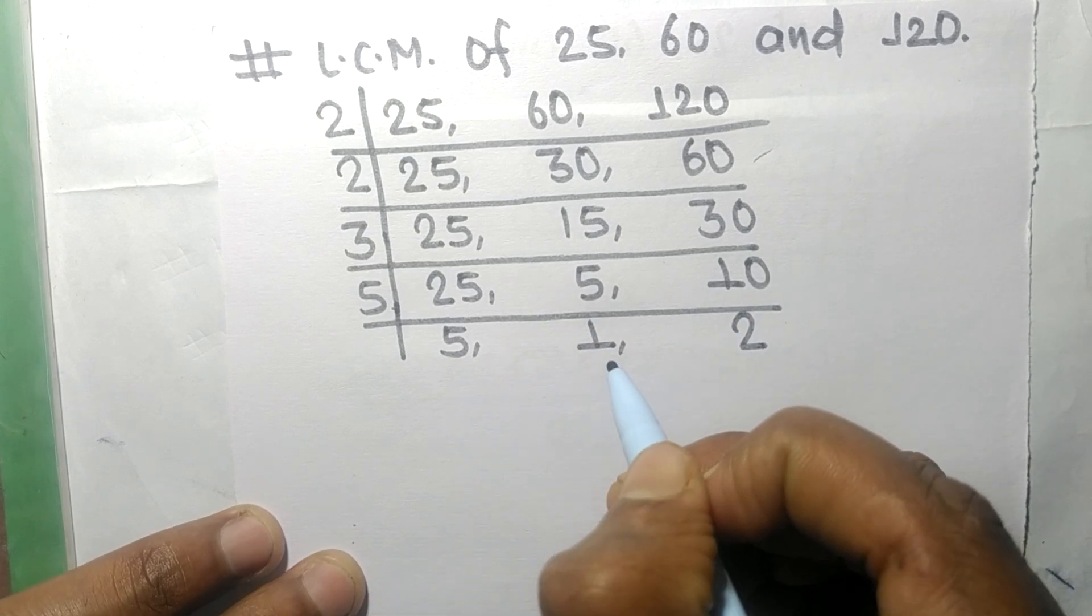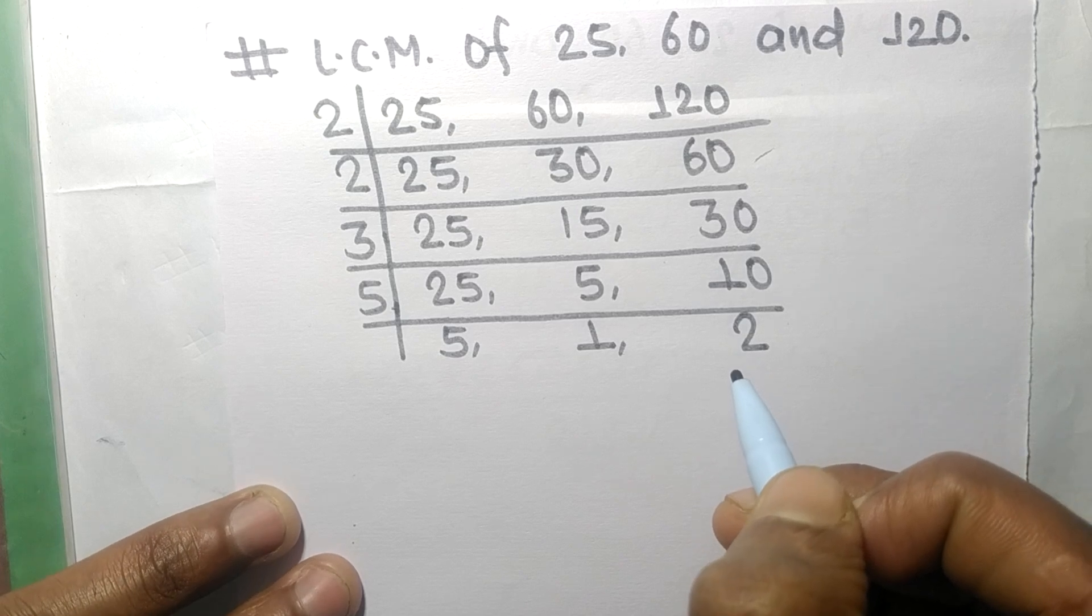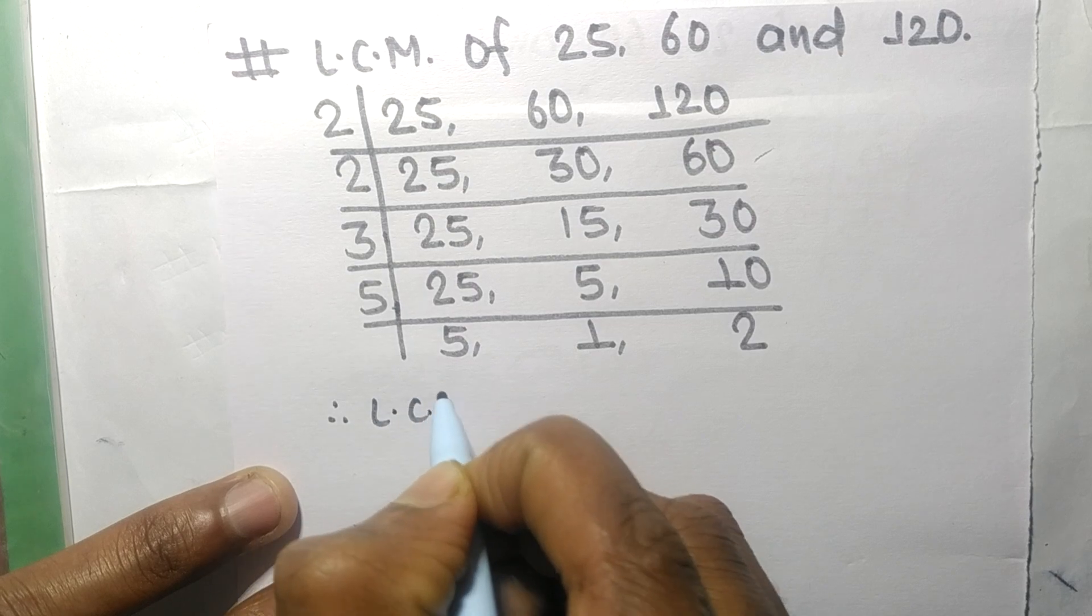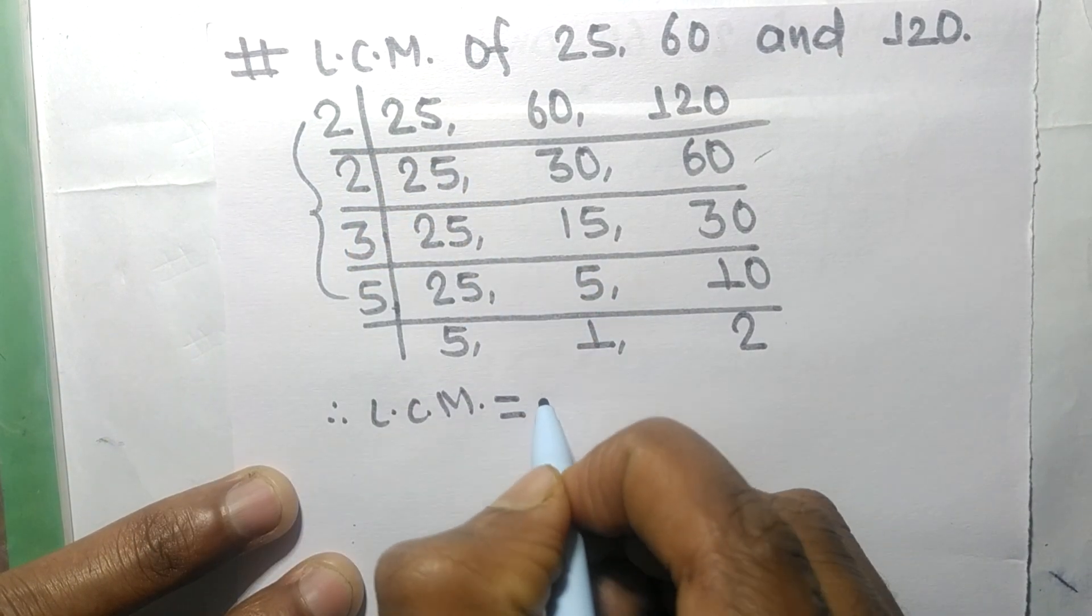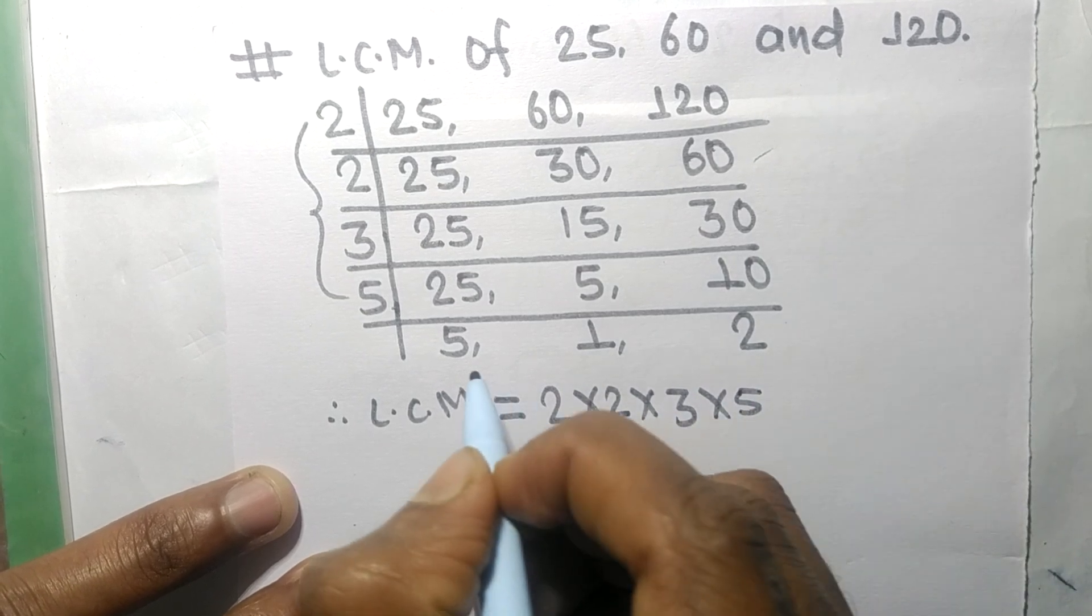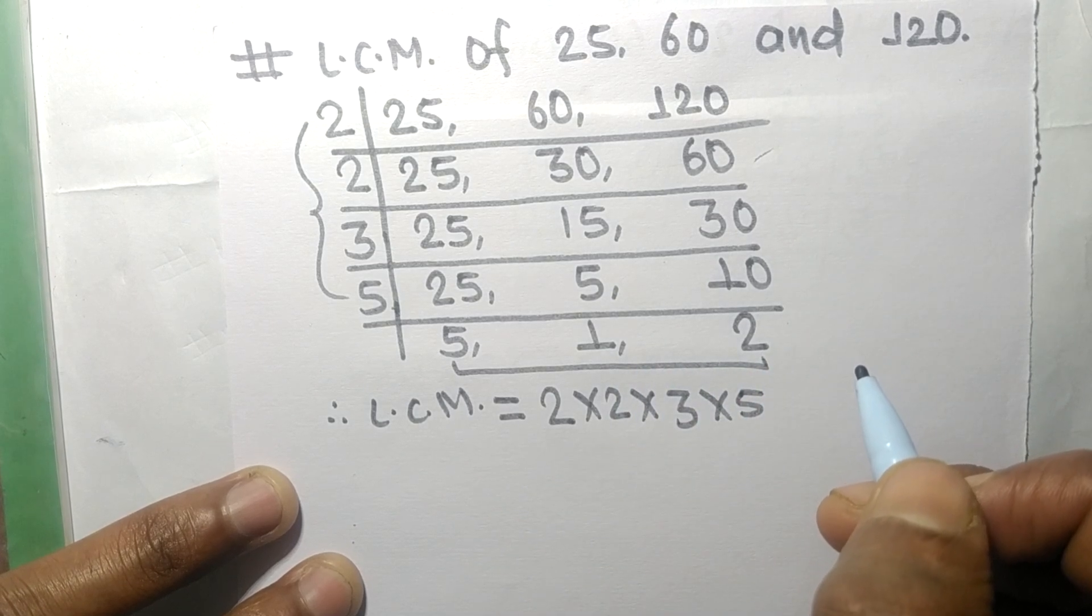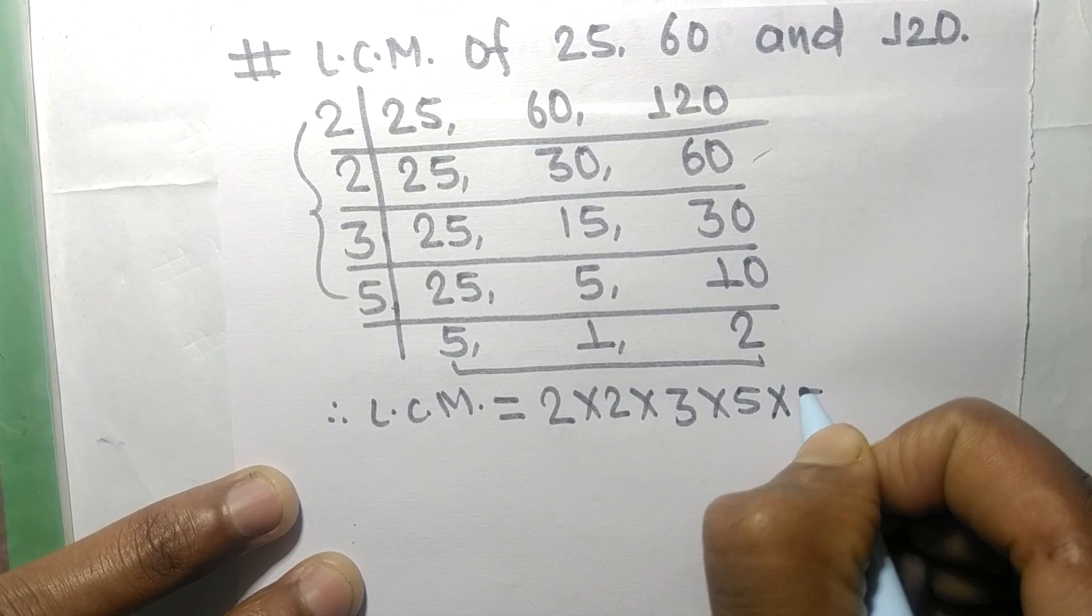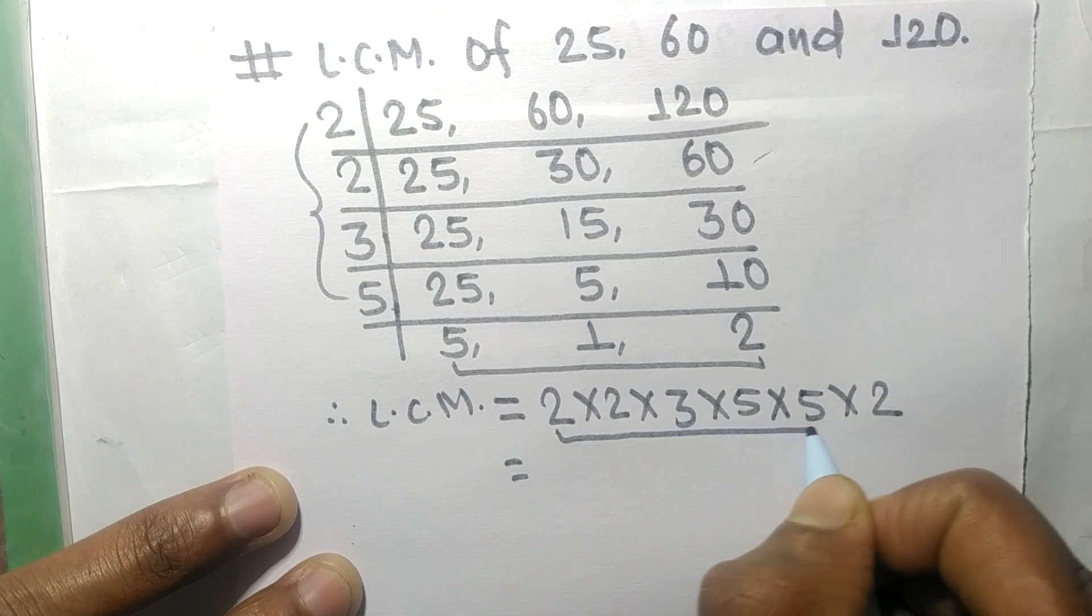Therefore its LCM is equal to, from this side it is 2 times 2 times 3 times 5, and from this side we choose the numbers greater than 1, that is 5 and 2, so multiplied by 5 and 2. So by multiplying all these numbers we get 600.